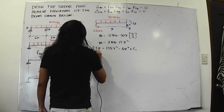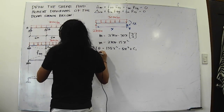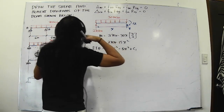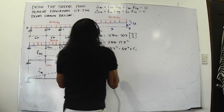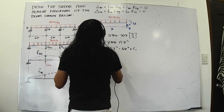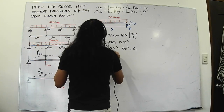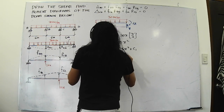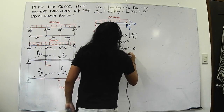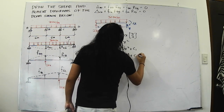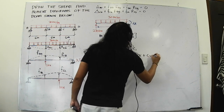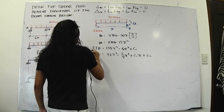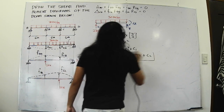Integrating again, we get EI·y equal to 45x³ minus 5/4·x⁴ plus C1·x plus C2. So we have the general deflection expression. Now let's go to the boundary conditions.